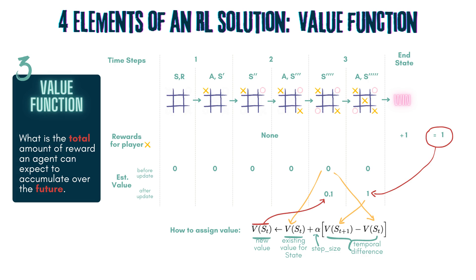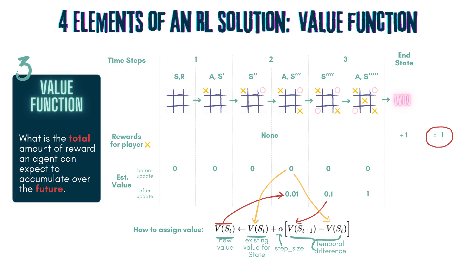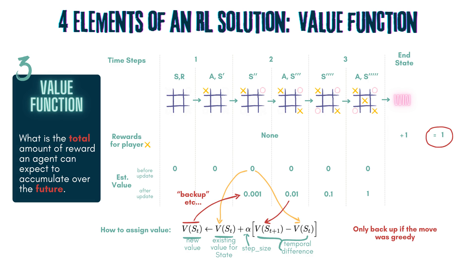To calculate how the value of the second-to-last state should be updated — let's call this state 4 — we take the difference between the value of state 5 and the old value of state 4. This is called the temporal difference. We multiply the temporal difference with the step size alpha, which determines the speed of learning. Assuming alpha is set to 0.1, the product of alpha and the temporal difference is added to the old value of state 4, giving a new value of 0.1. The same procedure is repeated for state 3, resulting in a new value of 0.01, and likewise for state 2. This procedure is called backup, and it continues until all values are updated for the stream of states leading back to the start of the game.